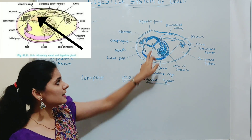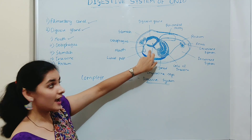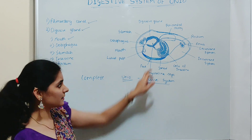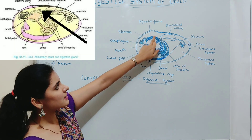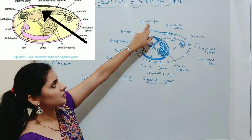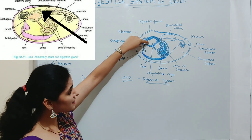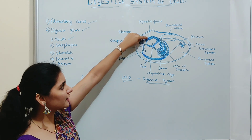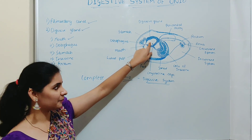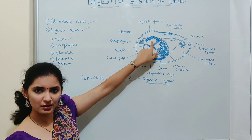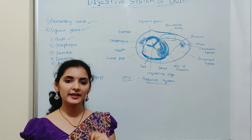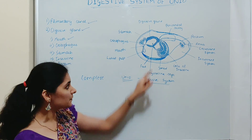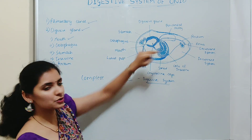The stomach of Unio is a thick-walled, sac-like structure, and its inner lining is also ciliated, similar to the esophagus. As seen in the diagram, the stomach is surrounded by the digestive gland. The digestive gland opens into the stomach by many ducts, through which the contents of the digestive gland are poured into the stomach. Near these duct openings, the wall of the stomach is highly folded, which helps in food storage and transport from the stomach to the intestine.